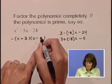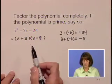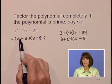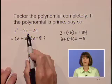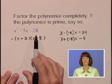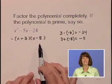So the correct coefficients to use here are positive 3 and negative 8. We'll put our plus 3 in place, or minus 8, and just a quick check of our inner and outer products, 3x minus 8x does indeed yield the negative 5x in the middle. So the correct factorization of x squared minus 5x minus 24 is x plus 3 times x minus 8.